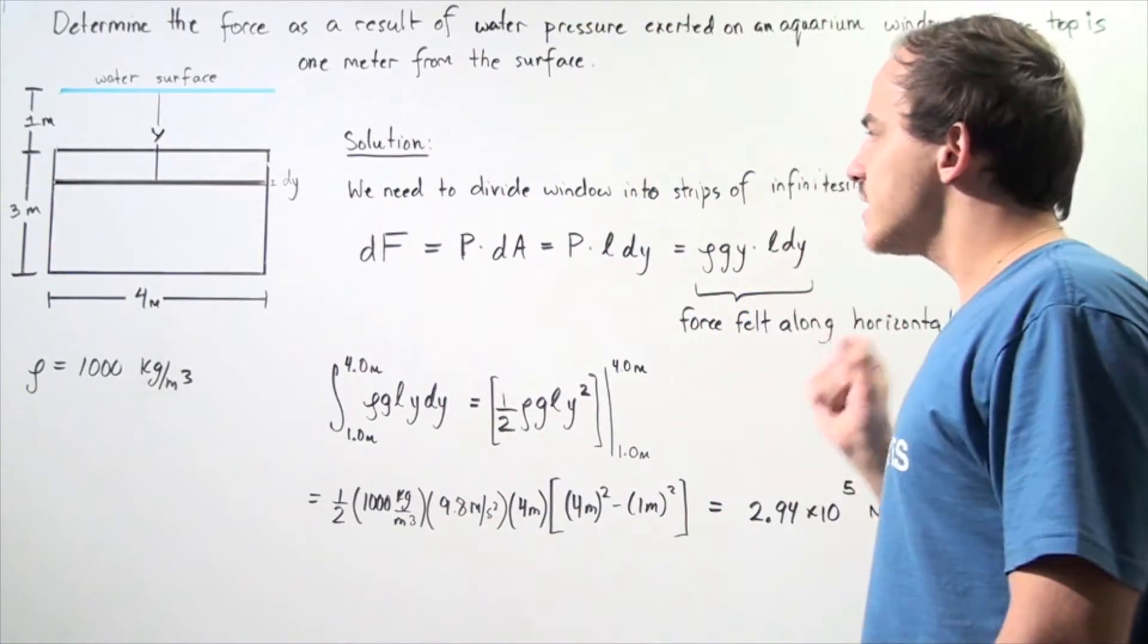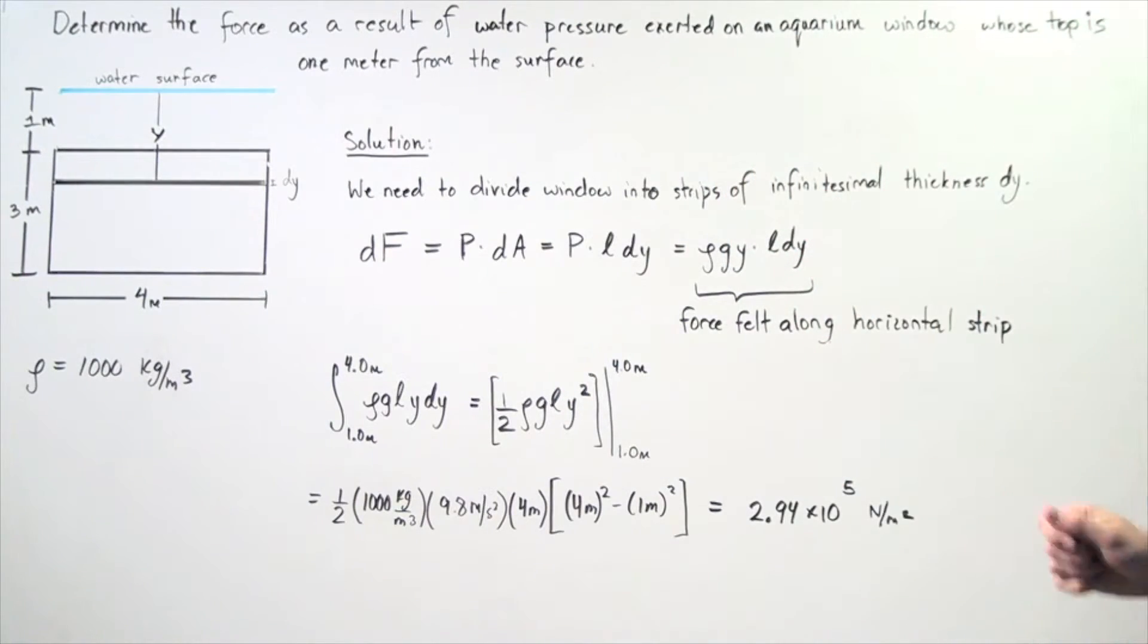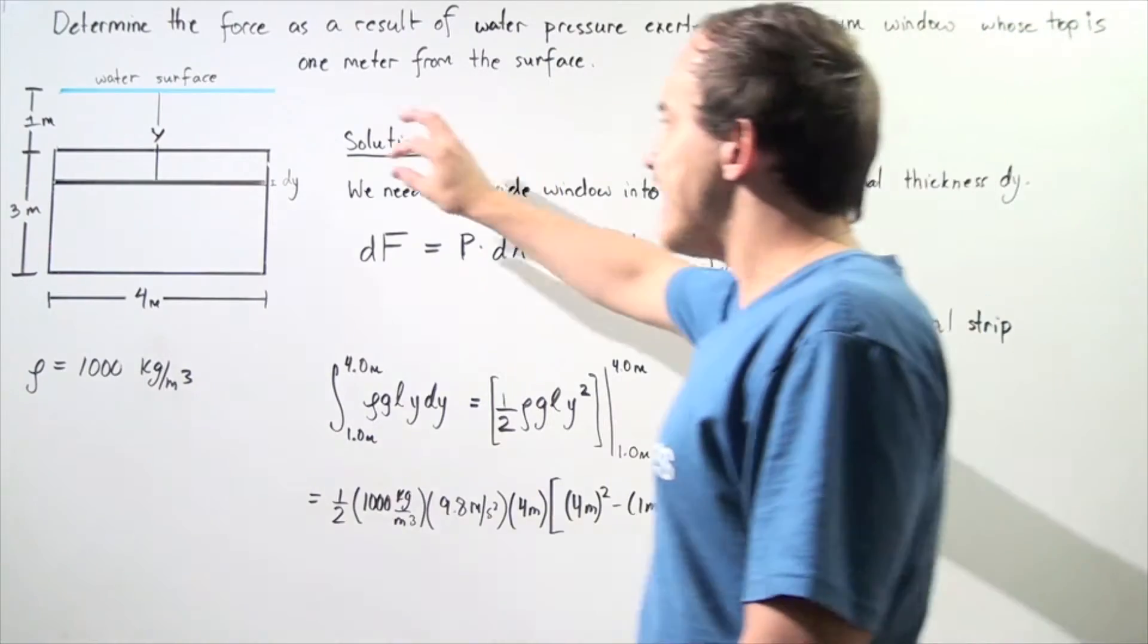So let's begin. Once again, we divide our window into strips of infinitely small thickness dy. So one such division is shown here.